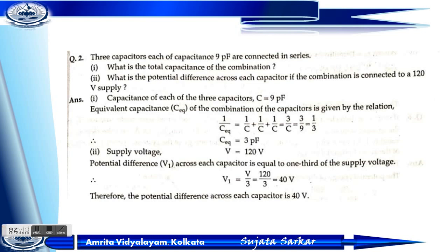Since all three capacitors are equal, C1 = C2 = C3 = C = 9 pF. So 1/C_total = 3/C = 3/9, giving C_total = 3 picofarad. The supply voltage V = 120 volt. The potential difference across each capacitor equals V/3 = 120/3 = 40 volt.